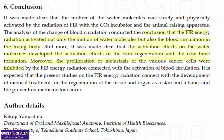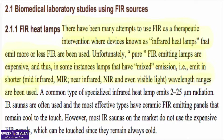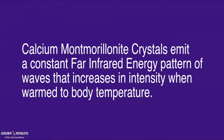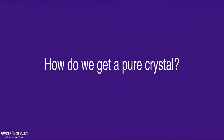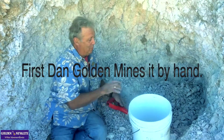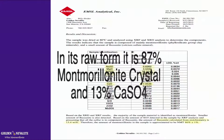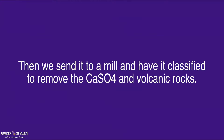Unfortunately, man-made therapeutic devices known as infrared heat lamps are expensive, and in many instances have mixed emissions outside of the far infrared spectrum. Calcium montmorillonite emits a constant far infrared energy pattern that increases in intensity when warmed to body temperature. So how do we get a pure crystal? Dan Golden mines by hand. In its raw form, it's 87% montmorillonite crystal and 13% calcium sulfate. Then it's sent to a mill and classified to remove the calcium sulfate and volcanic rocks.